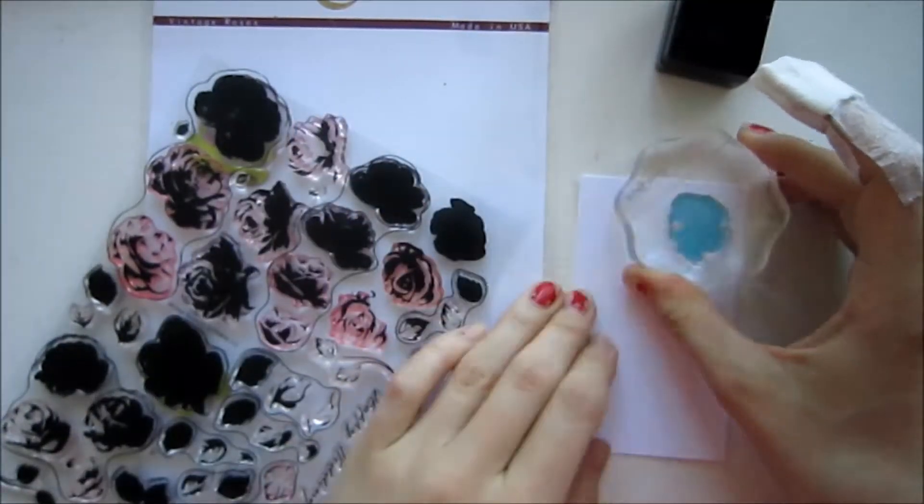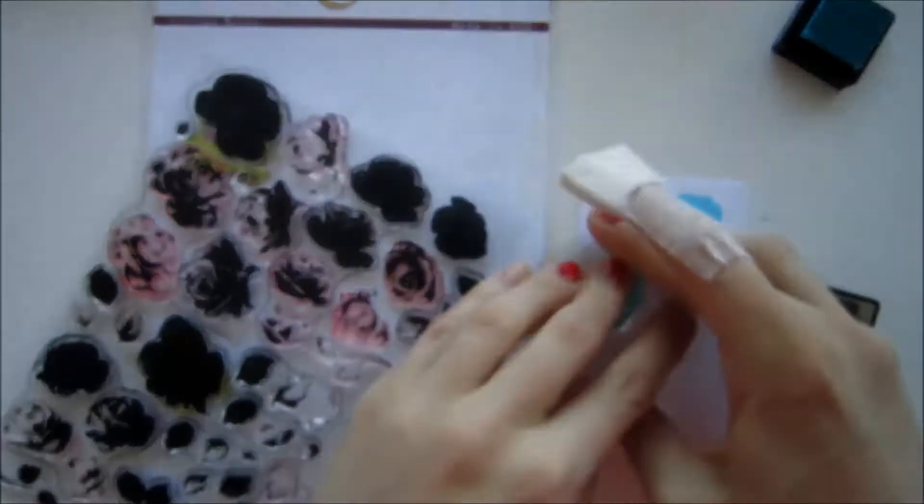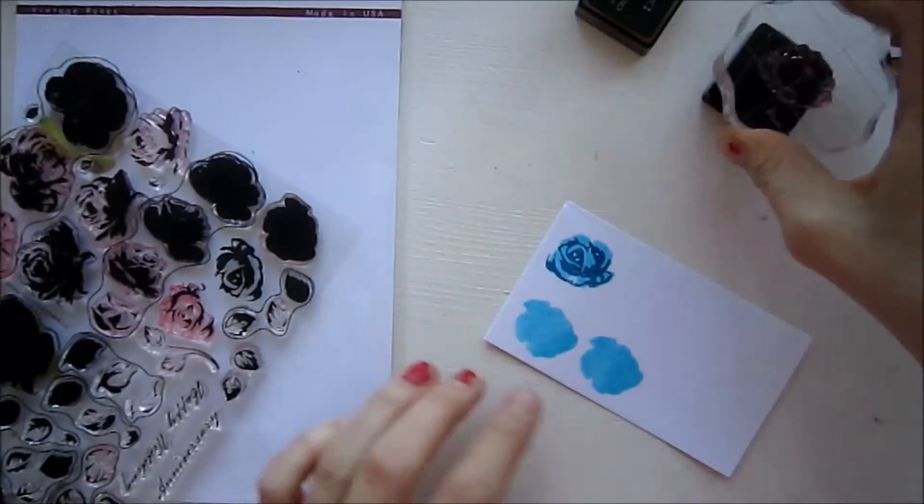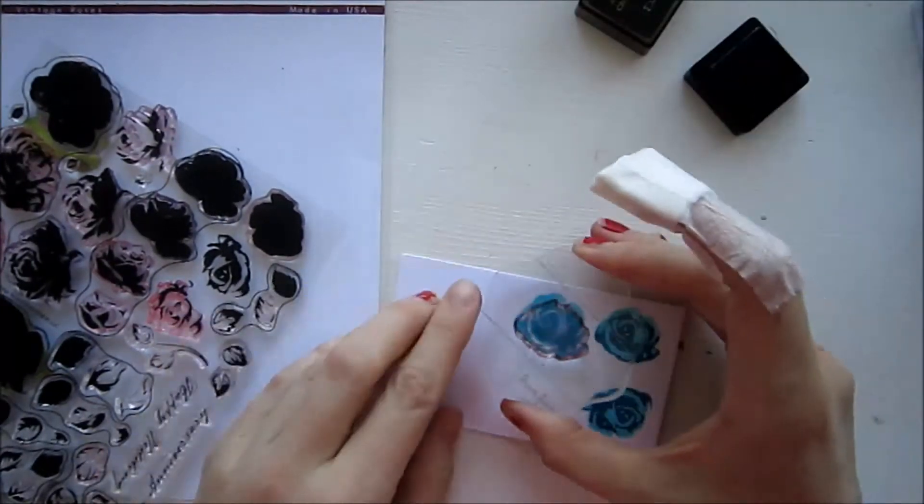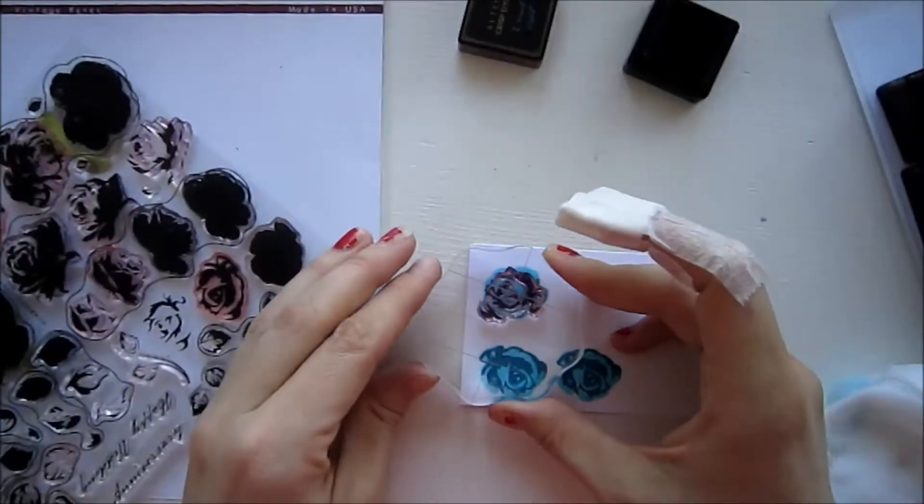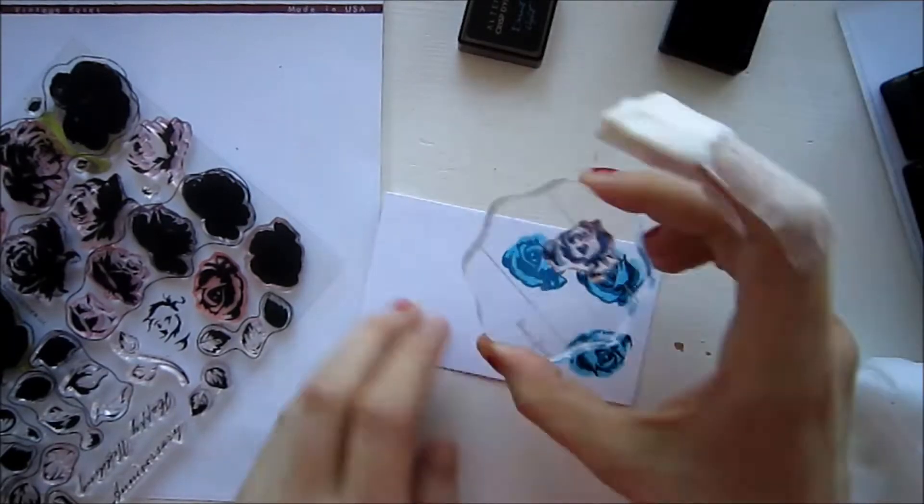I'm going to create this on top of a scrap piece of paper that is Neenah 80 pound cardstock and you can see that I'm taking all the three layers that comes with this flower and just using my acrylic block and looking through the stamp to position it right.